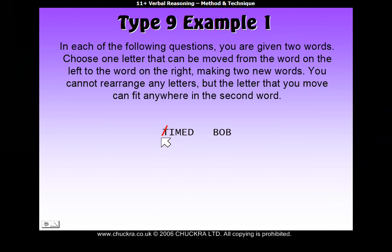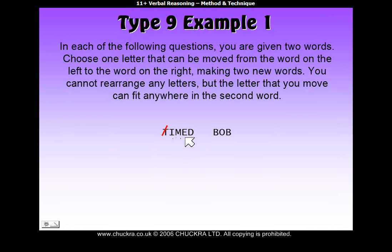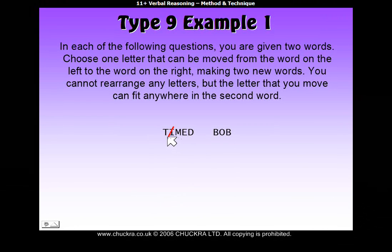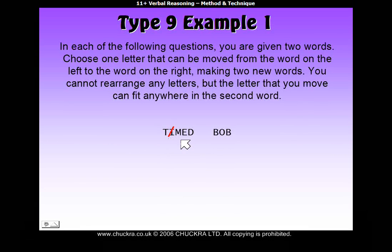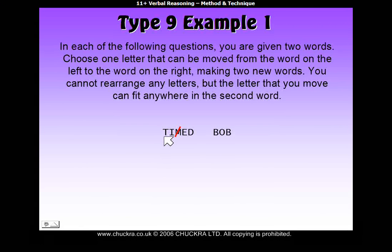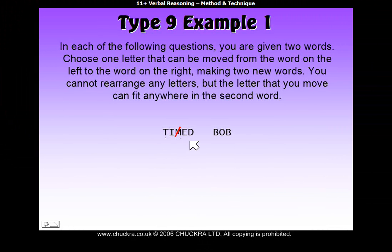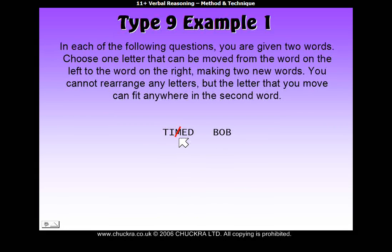If we were to try and move T over to the right, removing T from this side would leave us with 'imed,' which isn't a real word — so T is out of the question. If we were to try I, we'd be left with 'tmed,' which isn't a real word on the left, so we can't do that. If we were to use M, we'd be left with 'tied,' which is a real word, so M is actually a possibility.